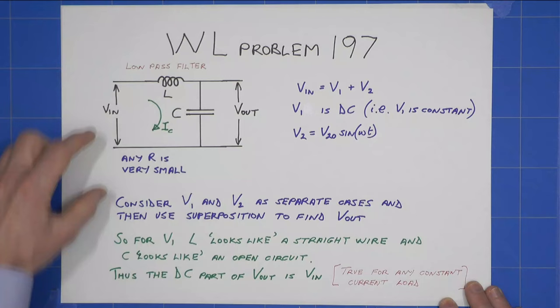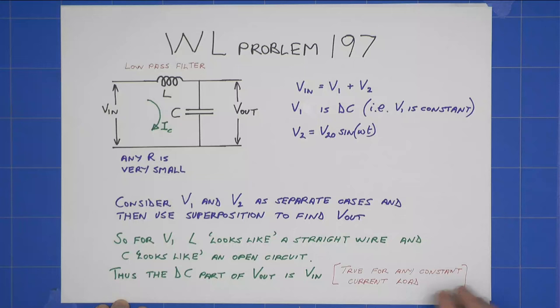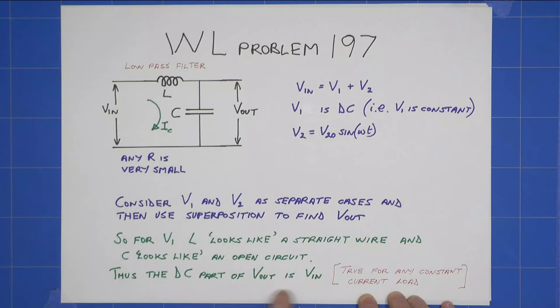So for V1, this circuit simply looks like two wires running like that. So the DC component of Vout is going to be Vin. That will be true for any constant current. If there was a load here drawing a constant current out there and back that way, then that condition Vout equals Vin for the DC part would still be true.